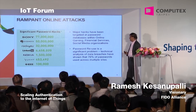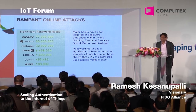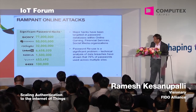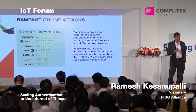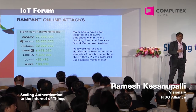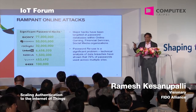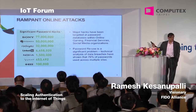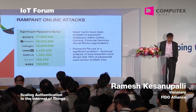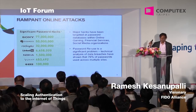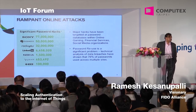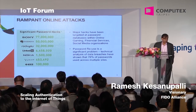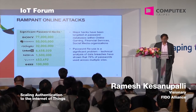Recent online identity attacks — identity theft, stealing — all online fraud is directly related to somebody stealing your password. You've seen recent attacks on eBay, Evernote. Close to $270 to $280 billion worth of online fraud happening today is directly related to password theft. When we are evolving into Internet of Things, a very heterogeneous environment, if we don't fix the problem of security, identity, protection, and privacy of data, we are going to be in a very big problem.